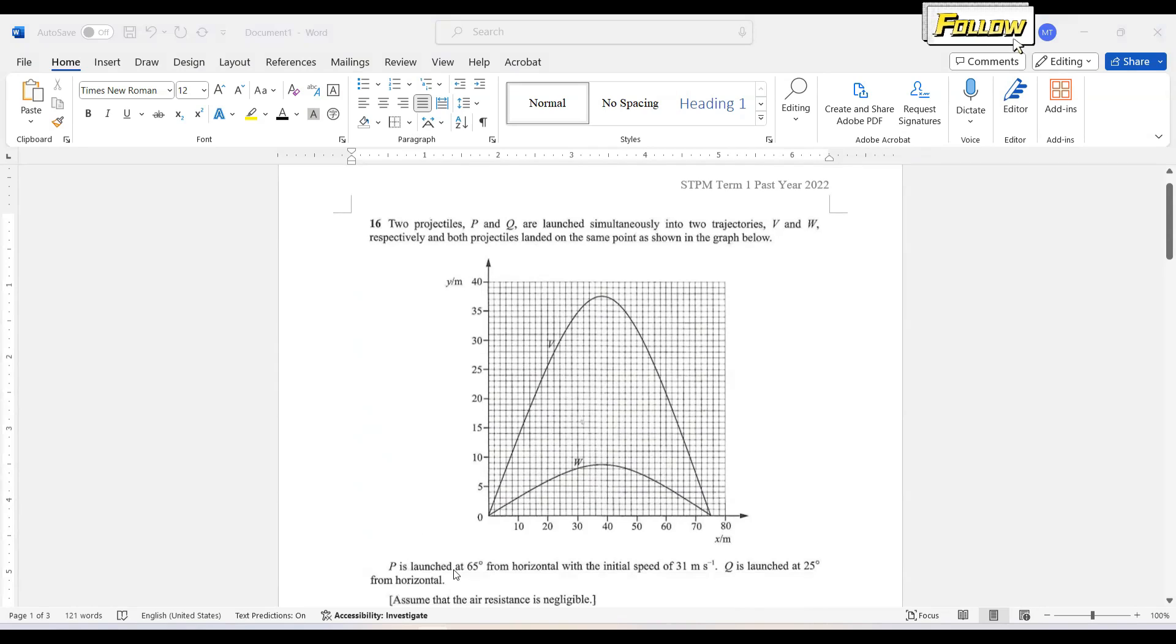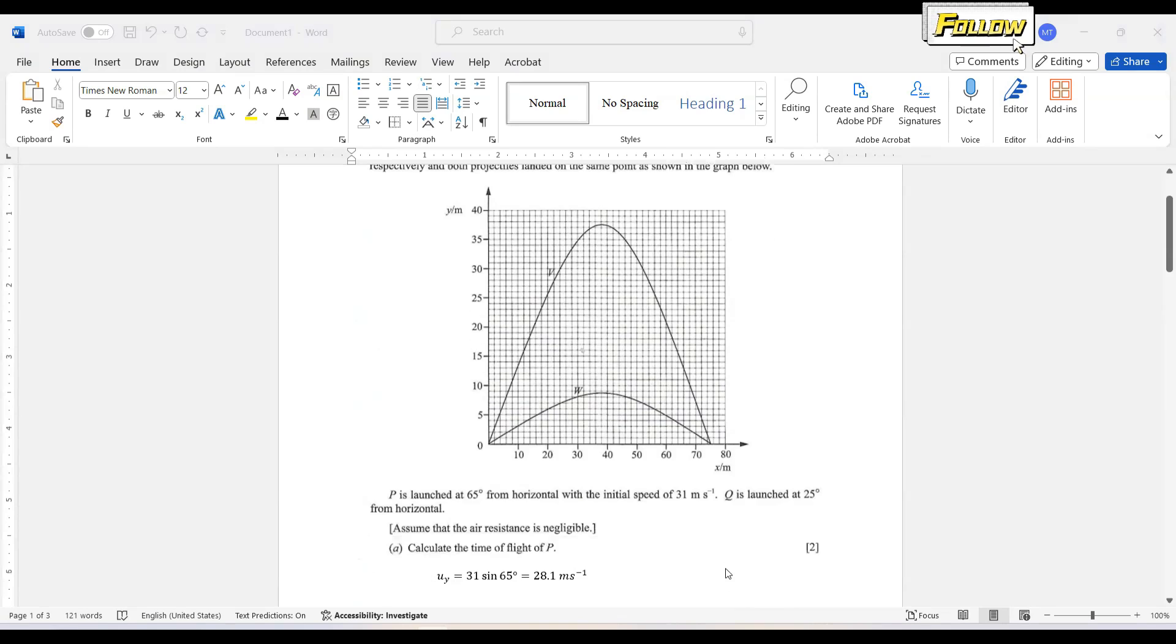P is launched at 65 degrees from horizontal with initial speed of 31 meters per second and Q is launched at 25 degrees from horizontal. So the first question is to calculate the time of flight of P.